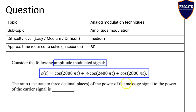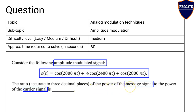In any modulation scheme, the message signal and carrier signal are the two types of signals available. The message signal is the actual information-bearing signal, while the carrier signal carries the message information over a distance. In FM or AM radio, the message signal is the actual speech, song, or whatever is broadcast from the radio station, generally in the audio frequency range.